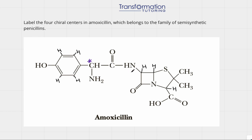Now let's look at this carbon in the ring. It has a hydrogen and nitrogen, and then it has a carbon and a carbon. This carbon is connected to sulfur and nitrogen, but this other carbon is connected to a double bond O. So going this way and this way is different, and therefore this carbon is a chiral center.